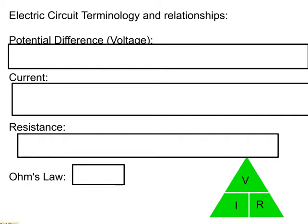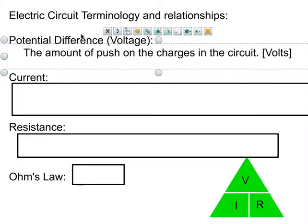Some different terms we need to understand when dealing with electric circuits: the first is potential difference, otherwise known as voltage. Potential difference also comes up in static charges — a Van de Graaff generator with all those charges has a certain push because they repel each other. The difference in push between two objects is what causes that potential difference. We can think of potential difference as how much push there is on the charge in a circuit, and volts is the unit measuring that push.